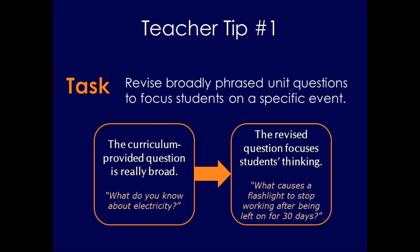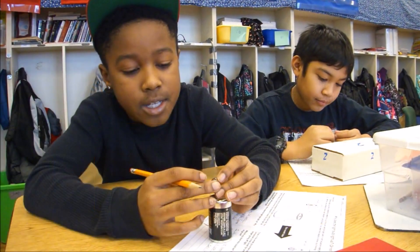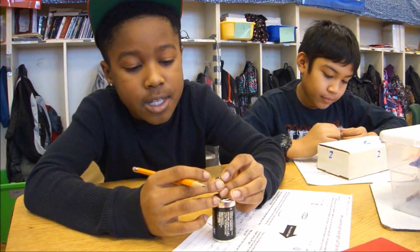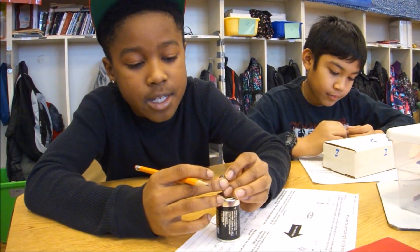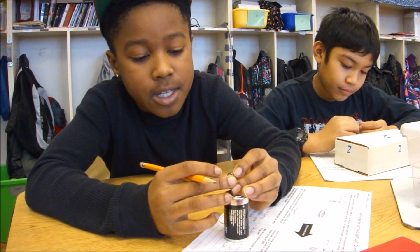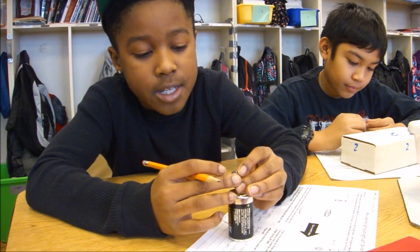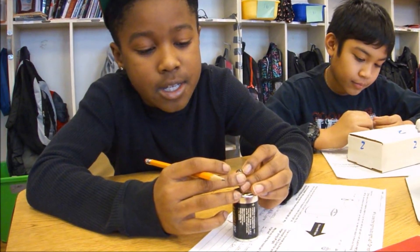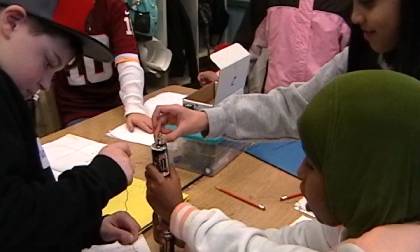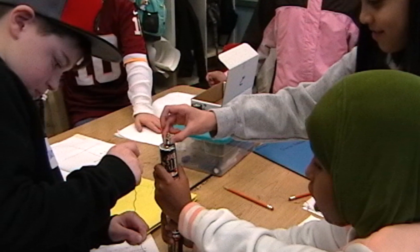What causes a flashlight to stop working after being left on for 30 days? The teacher engages students in an observational task. Students make observations about how a battery, wire, and bulb can be positioned to create circuits. These observations will help them later in hypothesizing about how a flashlight circuit works.